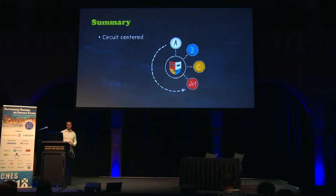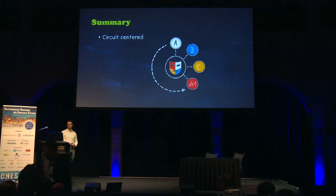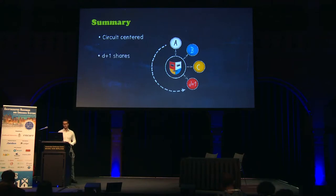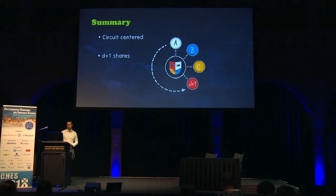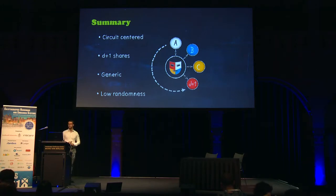A brief summary of domain-oriented masking: it's a circuit-centered scheme with circuit-centered rules, making it convenient for hardware designers. It uses D+1 shares, which is the minimum amount to achieve D-th order security, leading to quite efficient masking designs. It is also completely generic, meaning we can easily synthesize circuits for any protection order we target, and compared to other generic masking schemes it is low randomness.